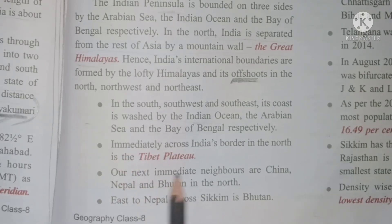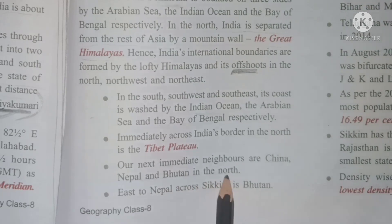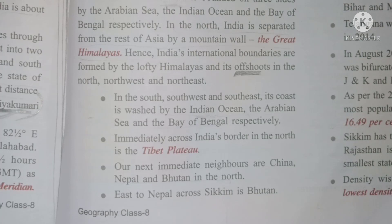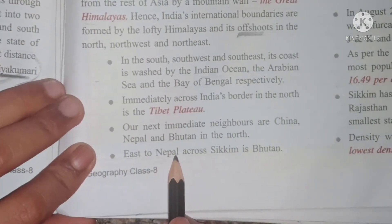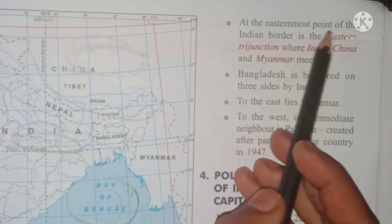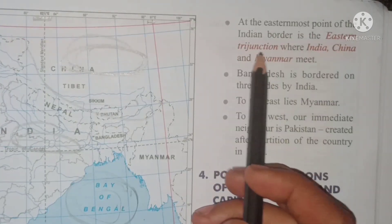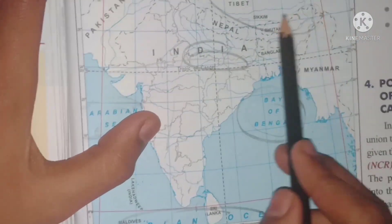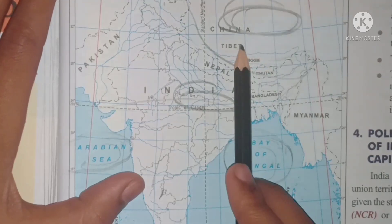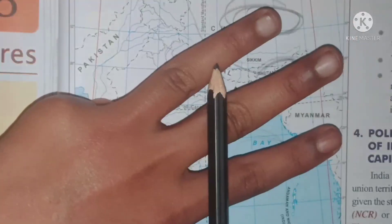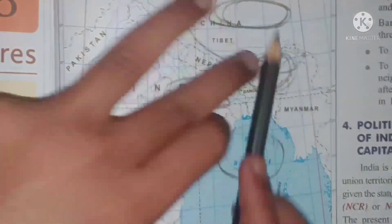Our immediate neighbors are China, Nepal, and Bhutan in the north. At the easternmost point of the Indian border is the east tri-junction, where India, China, and Myanmar meet. Tri means three — these are the three countries meeting at this tri-junction.